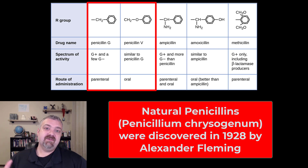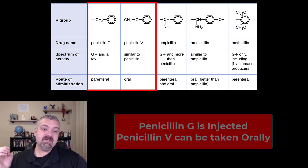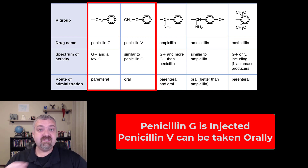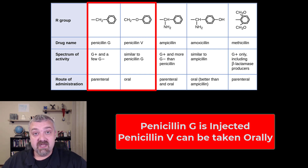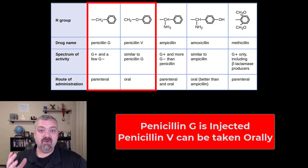It was first discovered in 1928 and commercially used in 1944 — I covered the history in a separate video. So, penicillin G versus V: here's how I remember them. G comes before V in the alphabet; injection comes before oral, and I comes before O. So penicillin G has to be injected, while penicillin V can be taken orally. Penicillin G is primarily effective against gram-positive bacteria and a small handful of gram-negatives. Penicillin V has an added oxygen in its R group making it more stable in stomach acid, so it can be taken orally.